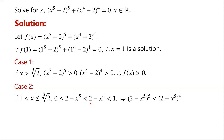For x greater than 1 and less than or equal to the fifth root of 2, since 0 is less than or equal to 2 minus x to the power of 5, which is less than 2 minus x to the power of 4, we get that 2 minus x to the power of 5, to the power of 4, is less than 2 minus x to the power of 4, to the power of 4.